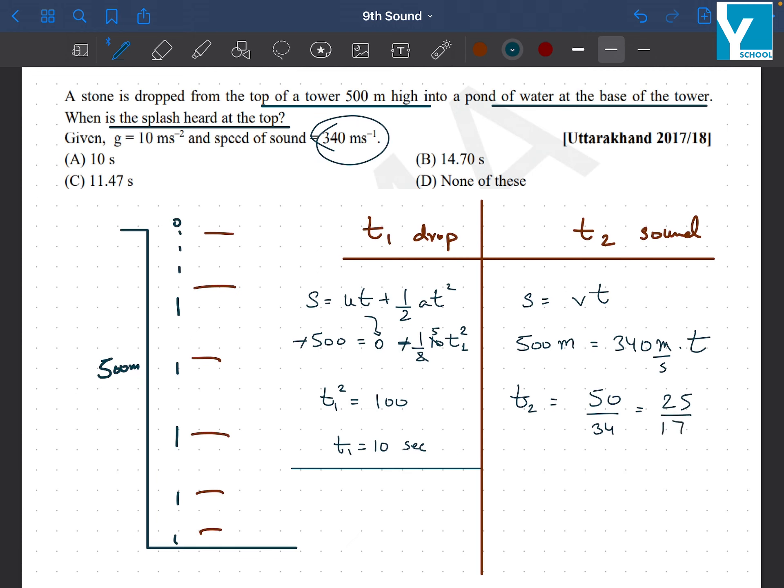This is not something greater than 2, so we can simply say the answer is 10 plus 1.47. So when we add these two timings we get the total time, the time required for the sound to reach to the top.